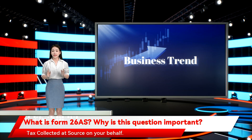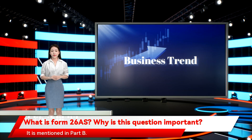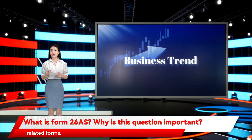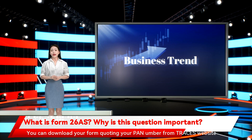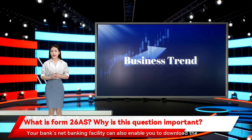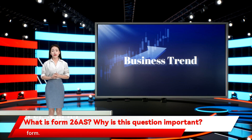Tax collected at source on your behalf is mentioned in Part B. Form 26AS is available online, just like all the other tax filing-related forms. You can download your form quoting your PAN number from TRACES website at traces.tdscpc.gov.in.